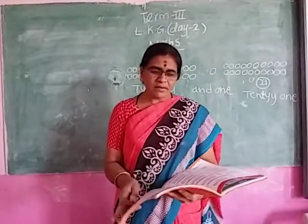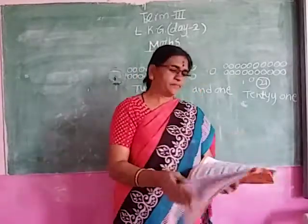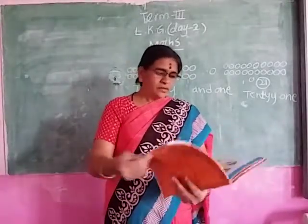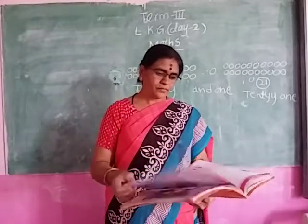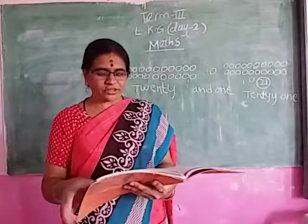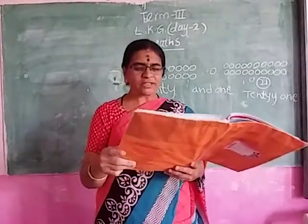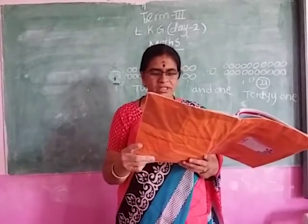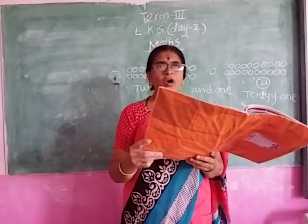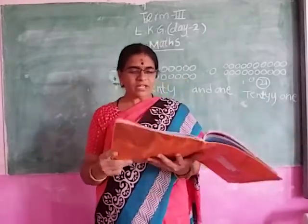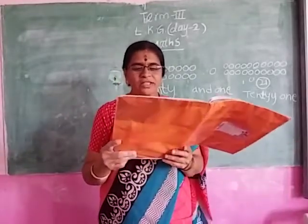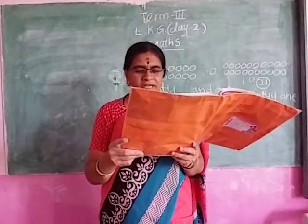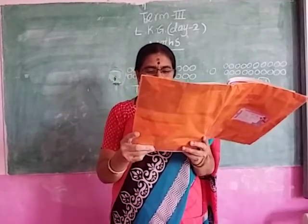Okay children, now rhyme. Teapot. I am a little teapot, short and stout. This is my handle and this is my spout. When the water is boiling, hear me shout. Shall I say one more time? I am a little teapot, short and stout. This is my handle and this is my spout. When the water is boiling, hear me shout. Just lift me and pour me out.